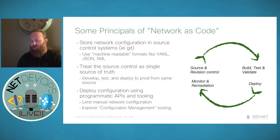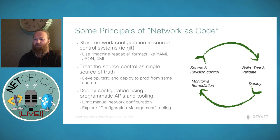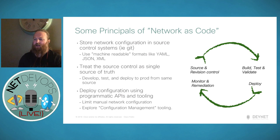Instead of storing running configurations on a random server or somebody's desktop, we store configurations in source control as machine-readable formats like YAML, JSON, and XML so we can use them in our automation process. We treat control systems such as GitHub as the single source of truth, using it for all development, testing, and deployment — from dev through to staging. When we deploy changes to the network, we use this single source of truth and our main Git repository, and if there are any problems we can use remediation tasks to roll back or make the necessary changes.